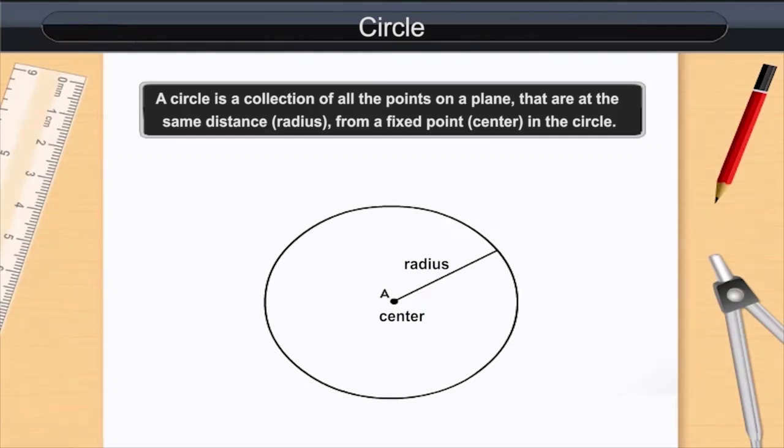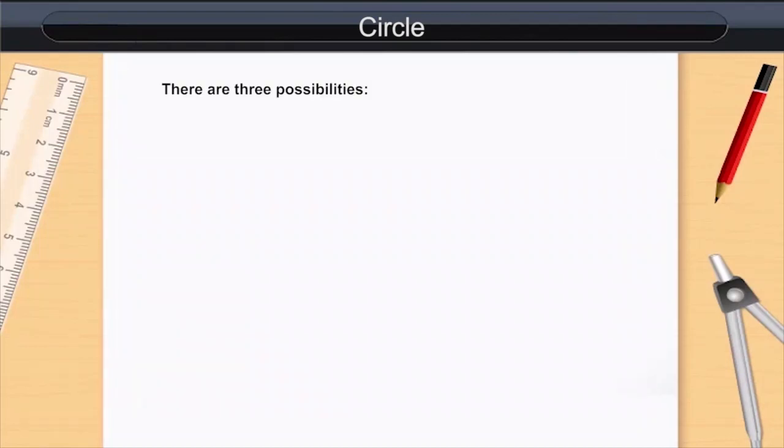Let us study different situations that arise when a circle and a line are given on a plane. There are three possibilities.